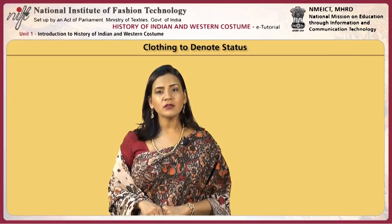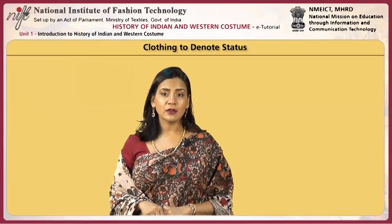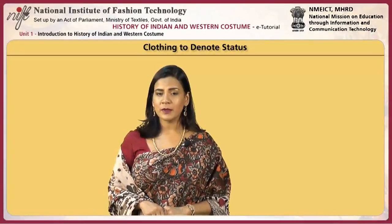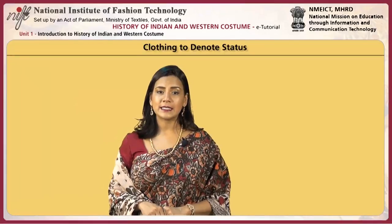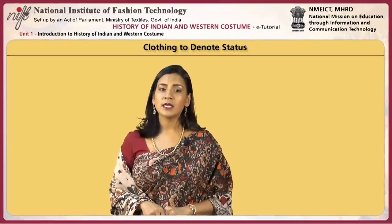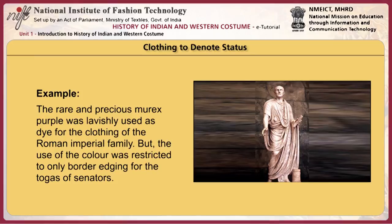One of the most ancient forms of status dress is clothing reserved for those of special rank, hierarchic privilege or economic significance. At various times in history, certain types of apparel, accessories, fabrics, trimmings, dyes and various other luxury goods were reserved for the exclusive use of the elite. These restrictions were often codified into sumptuary laws, which by design were enacted to keep society visibly stratified. Even within the ranking classes, sumptuary restrictions were established to denote status. For example, the rare and precious murex purple was lavishly used as a dye for the clothing of the Roman imperial family, but the use of the color was restricted to only border edging for the togas of senators.